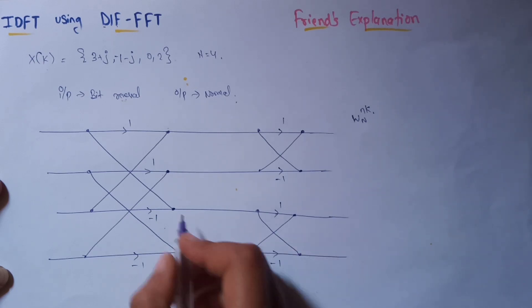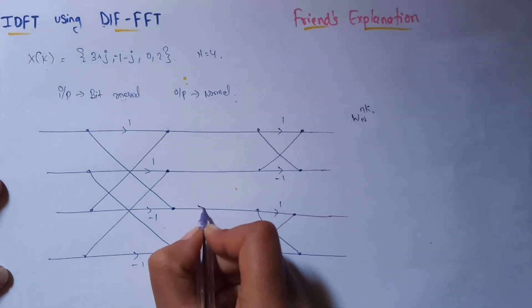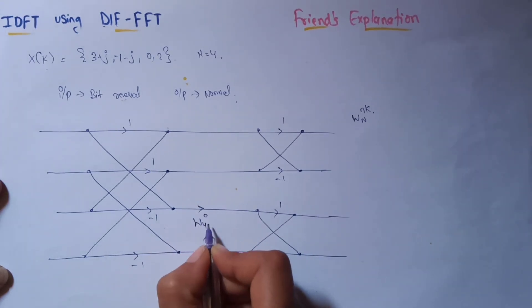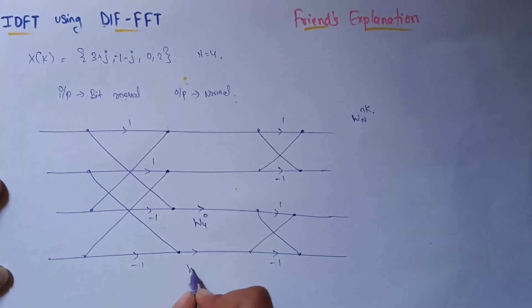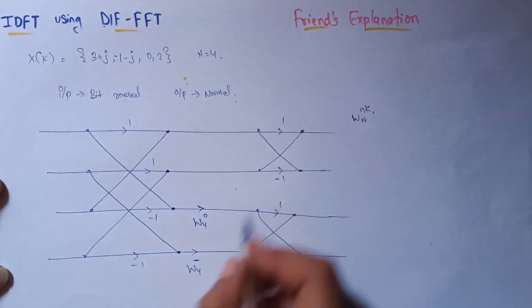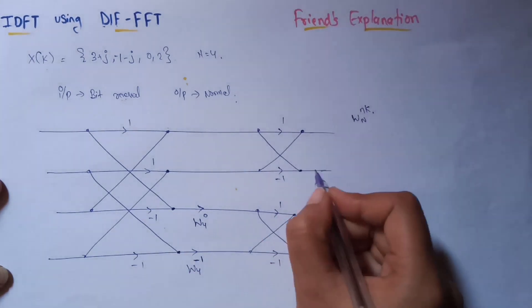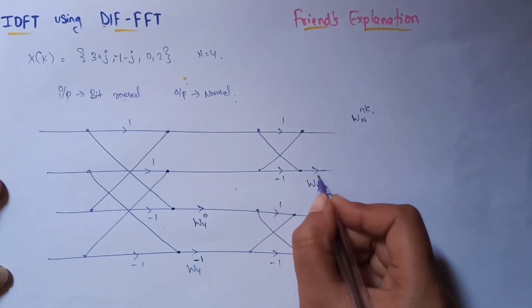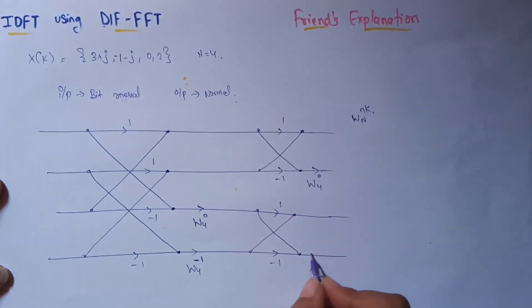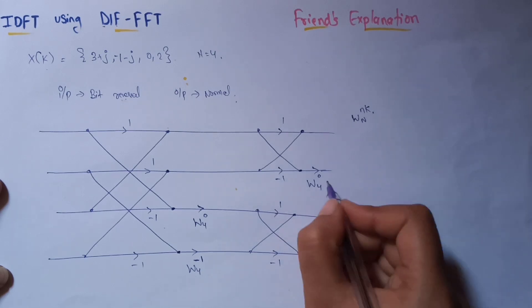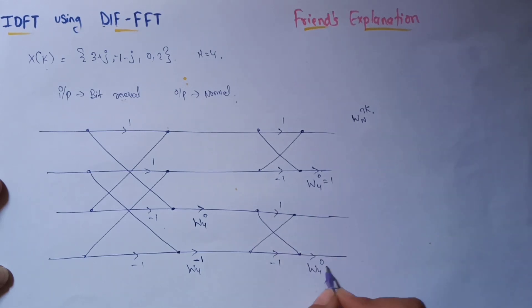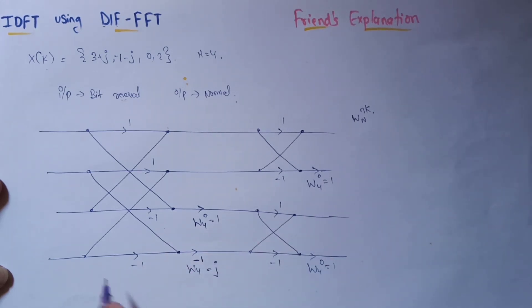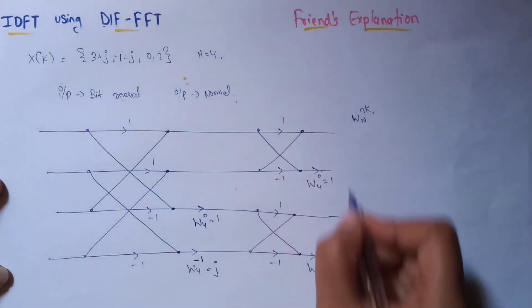But in this inverse discrete Fourier transform, we are going to take them on the right bottom of the butterfly. We will take W4 to the power of 0 and W4 to the power of nk, and this power nk should also be negative. On the left bottom we have the values 1, 1, 1, and plus j.